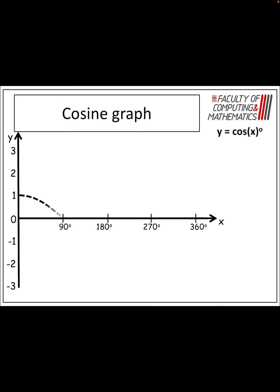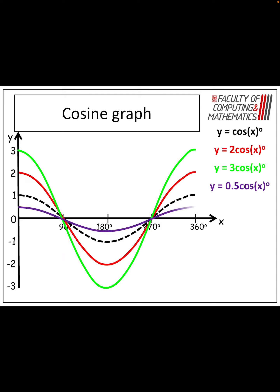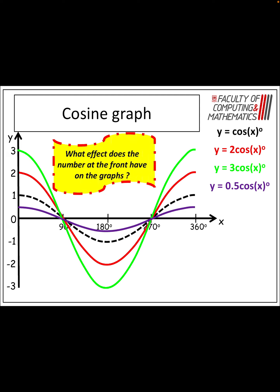The same thing happens with cos. The original cos graph cuts the x-axis at 90 and 270, with a maximum value of 1 at 0 and 360, and a minimum value of negative 1 at 180. 2 cos x is going to stretch it — maximum value of 2 at 0 and 360, minimum of negative 2 at 180. For 3 cos x, maximum value of 3, minimum of negative 3. For 0.5, because it's a half and less than 1, we're squashing it — maximum value of a half at 0 and 360, and a minimum value of negative 1 at 180 degrees.